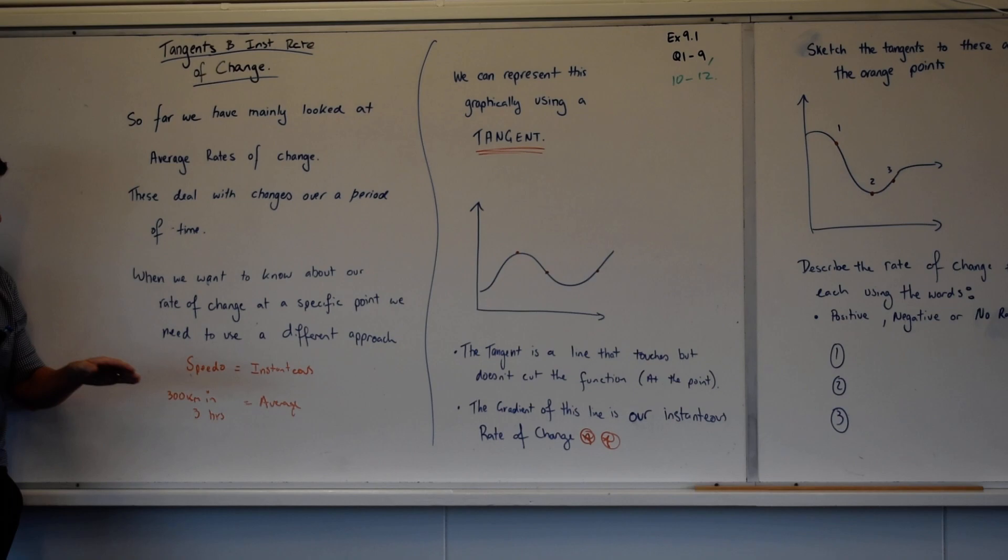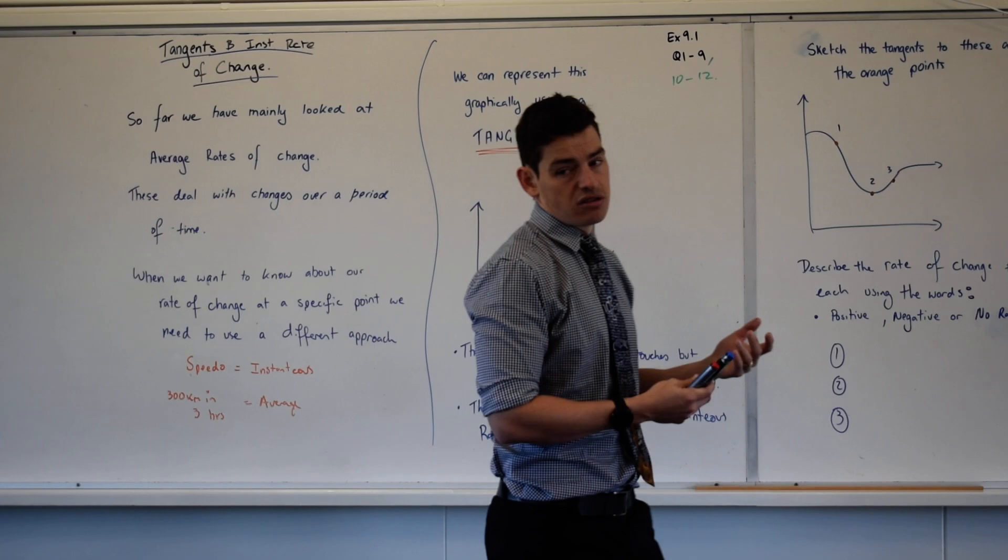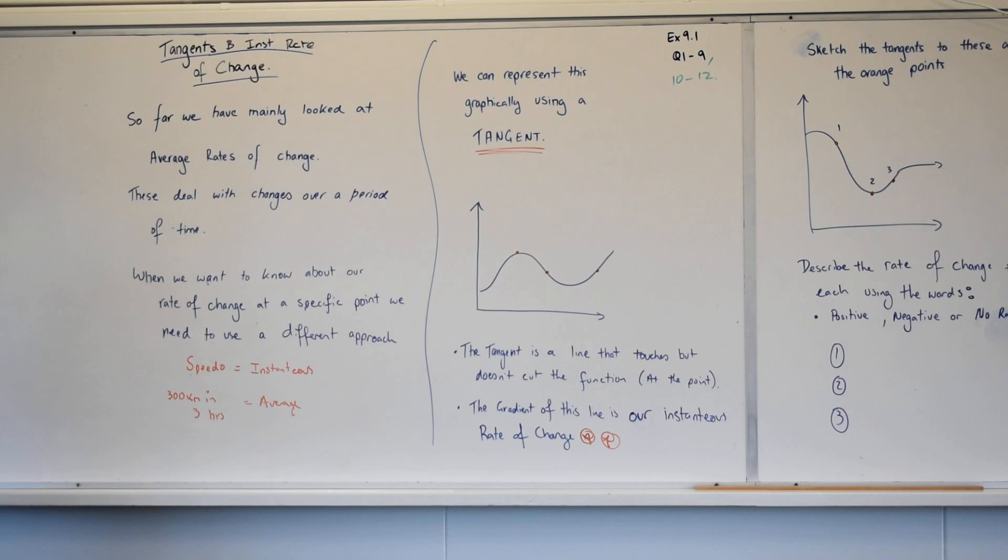Happy with that? The police are very concerned with your instantaneous rate of change. They're not as concerned with your average rate of change, which is, say I travel 300 kilometres in 3 hours, my average rate of change is 100 kilometres an hour.